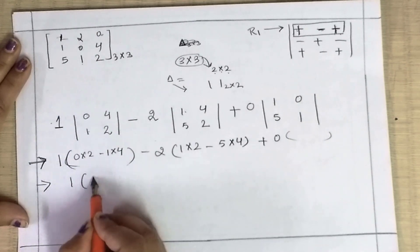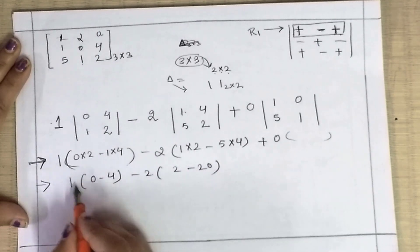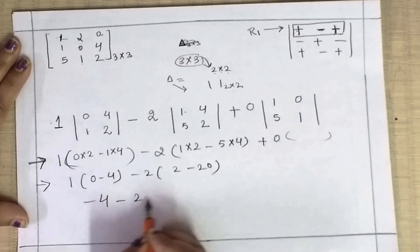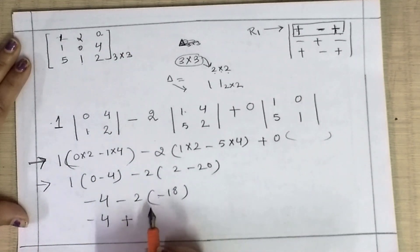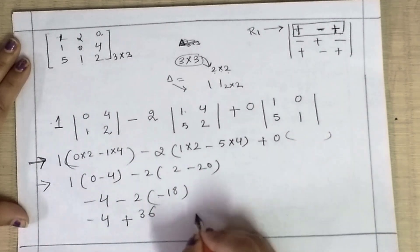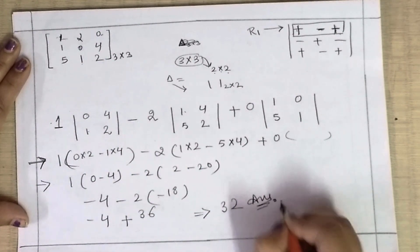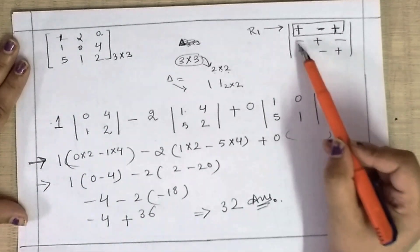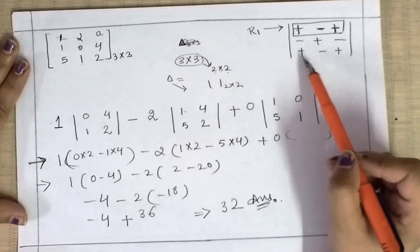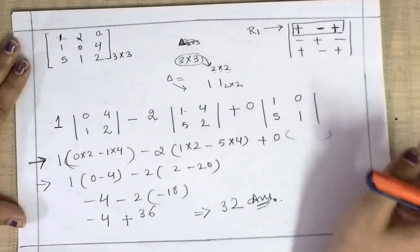Further simplifying: 0 minus 4, then 2 minus 20. So we have minus 4 and minus 18. Then minus minus gives plus, so 18 becomes part of the addition. Here you get 36 minus 4, that is 32 as your answer. Remember, you can expand along any column or any row, but at a time you use only one row or one column. I used row 1, which has signs plus, minus, plus.